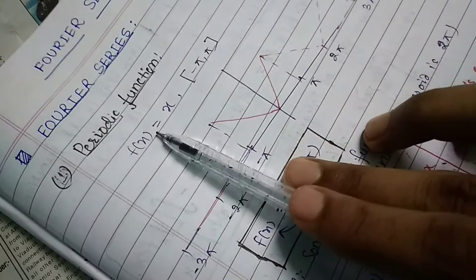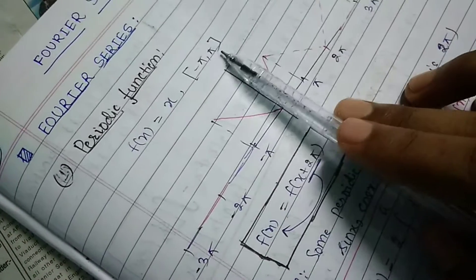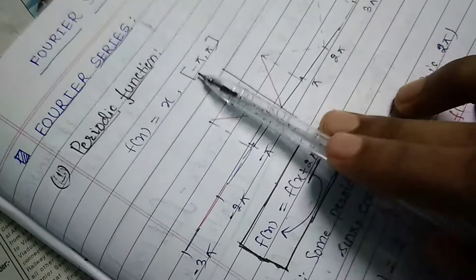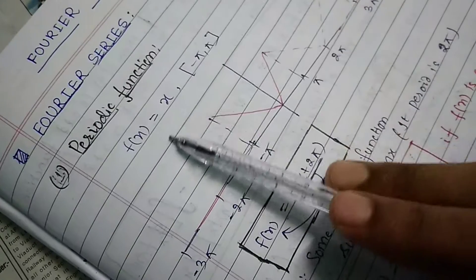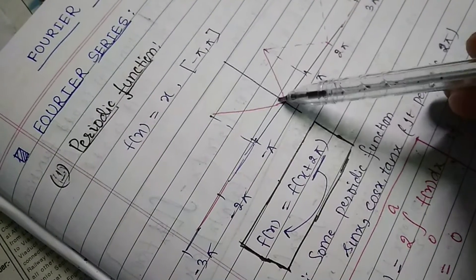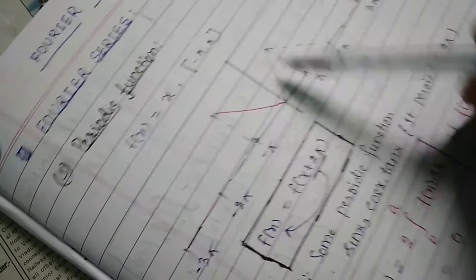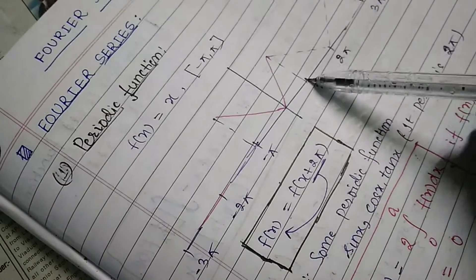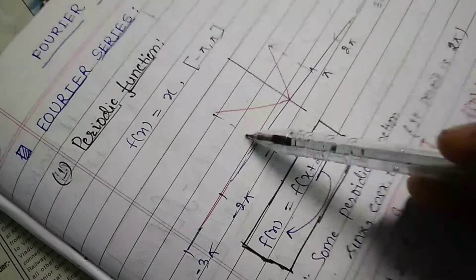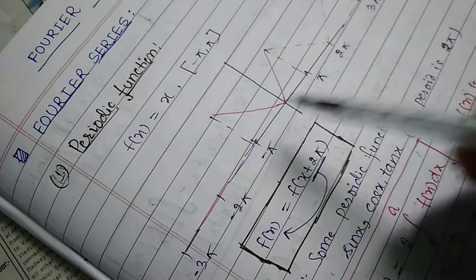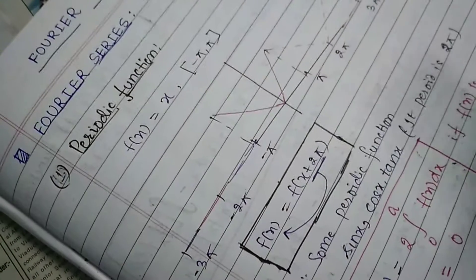For example, f(x) = x in the range minus pi to pi. The graph repeats after pi and after minus pi, so f(x) = x is a periodic function.